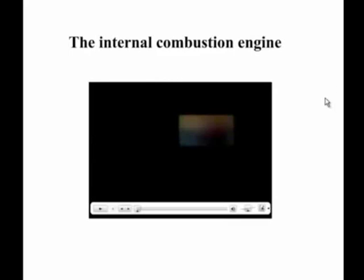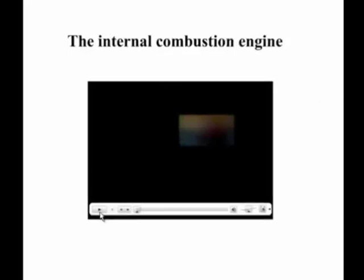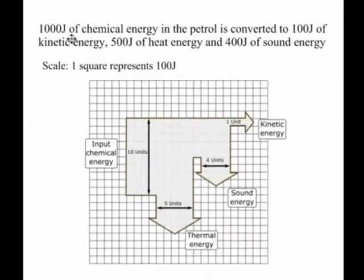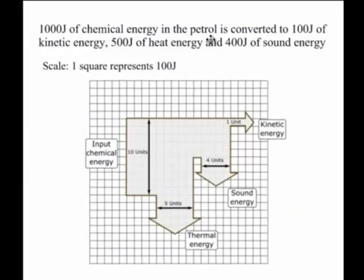Now we're going to look at the internal combustion engine, which is the engine in a car. For a car, energy goes in as chemical energy in petrol, and the useful energy output is kinetic energy, but there's also energy wasted as sound and heat energy. As an example: if we have 1,000 joules of chemical energy in the petrol, 100 joules will come out as useful kinetic energy, 500 joules as heat energy, and 400 joules as sound energy.